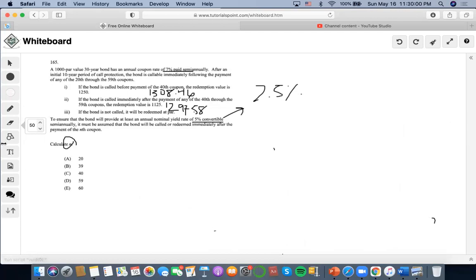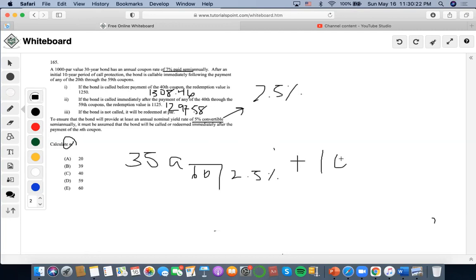We're going to set it as regular, 35A angle 60 at 2.5 percent plus 1,000 to the V60. There's 30 years in all, so this was all semi-annual. Let's solve for this: 35 as the payment, 60 as the number of years, 2.5 as the interest rate, 1,000 as the future value. It's going to be 1,309.09.